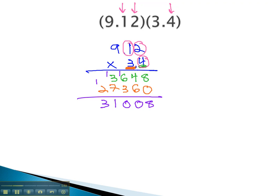2 from the first, 1 from the second. This means we need to have 3 decimal digits in our final answer. 1, 2, 3.